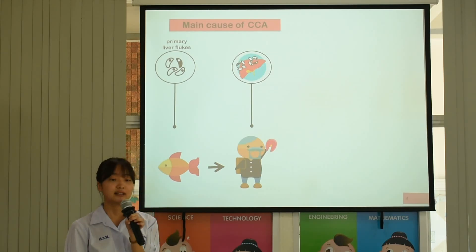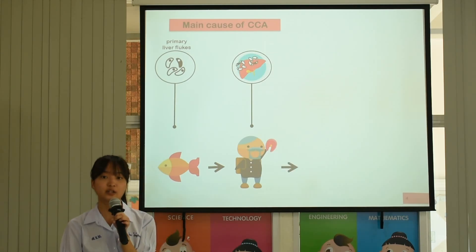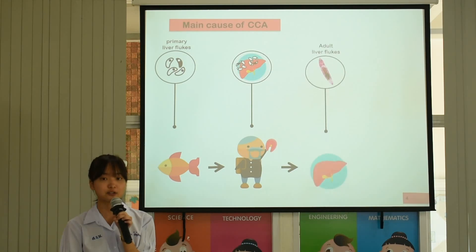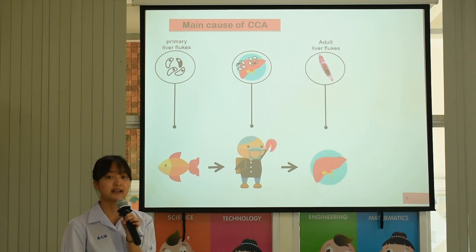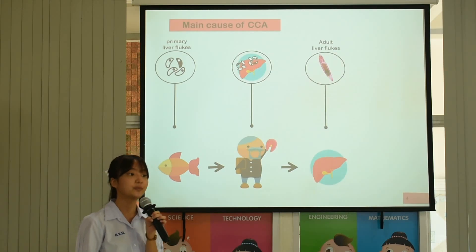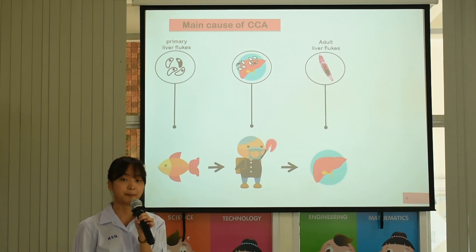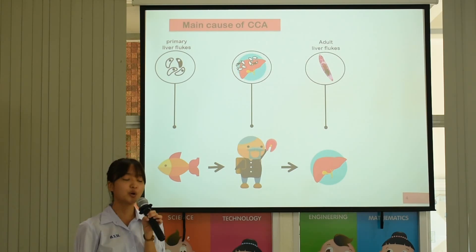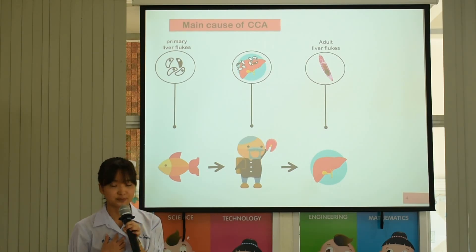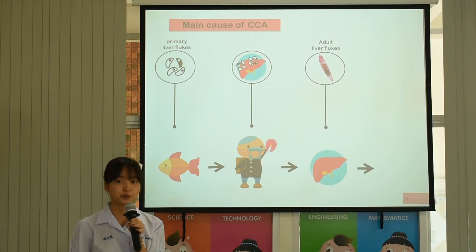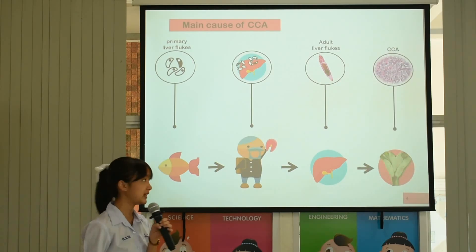Once these liver flukes grow to adult form, they cause bile duct injury and inflammation. So if our body cannot repair it, finally, it leads to CCA.